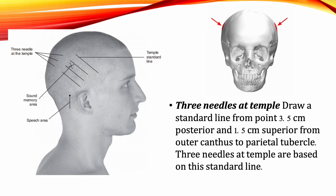Locations and Indications — Three Needles at the Temple. Draw a standard line from the point that is 3.5 cm posterior and 1.5 cm superior from the outer canthus to the parietal tubercle. The three needles at the temple are based on this standard line.